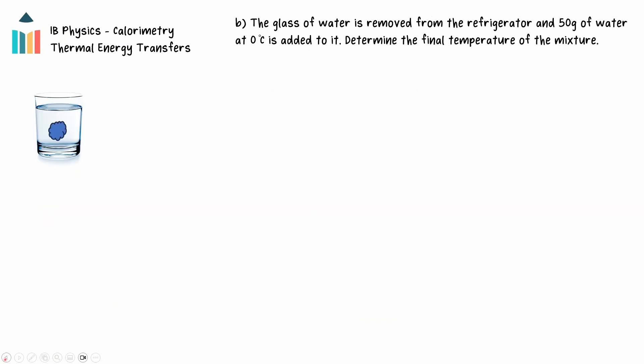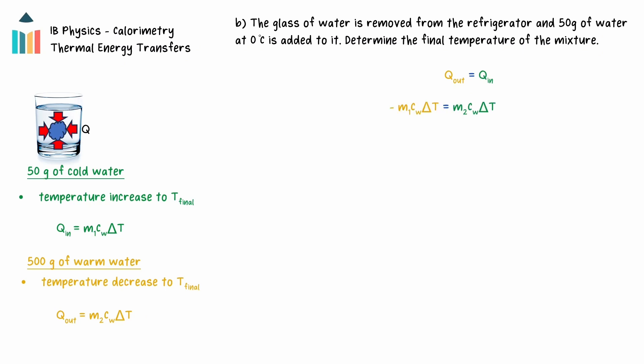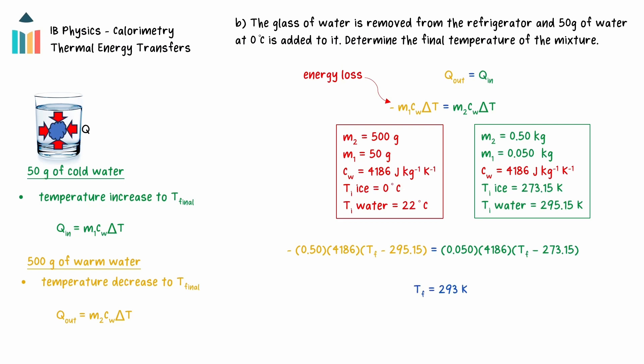Now we are told that the glass of water is removed from the refrigerator, and 50 grams of water at 0 degrees Celsius is added to it. We are asked to determine the final temperature of the mixture. Thermal energy will transfer from the water in the glass to the cold water until thermal equilibrium is reached. The total amount of energy transferred into the cold water will be equal to mc delta T, with m being the mass of the cold water. The water in the glass will have transferred thermal energy into the cold water, and as a result its temperature will have decreased. The energy gained by the cold water must be equal to the energy lost by the warm water, so these expressions can be set equal to each other. Note the use of the negative sign for the warm water — it has lost energy, so this must be accounted for. Substituting the known values into this equation and solving gives a final temperature of 293 Kelvin.